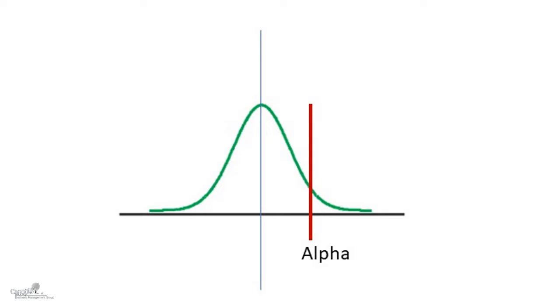Which means that the probability of rejecting a null hypothesis when it is actually true, that probability we take that threshold as 5%.